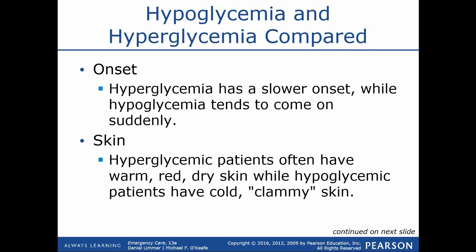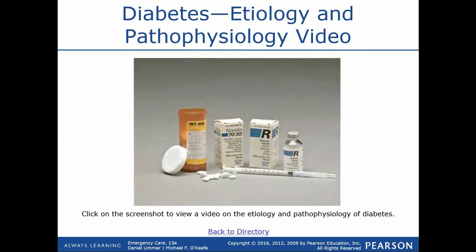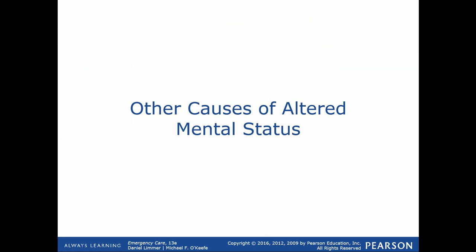The big differences between hypoglycemia and hyperglycemia: hypoglycemia is a rapid onset whereas hyperglycemia is a slower onset. With hypoglycemia, the patient will be cool, clammy, and pale. With hyperglycemia, they'll probably be warm, red, and flushed. Breathing for the hyperglycemic patient will be relatively rapid with that fruity odor, though not necessarily always. With the hypoglycemic patient, respiratory function may be slightly increased, but there should be no fruity odor at all.